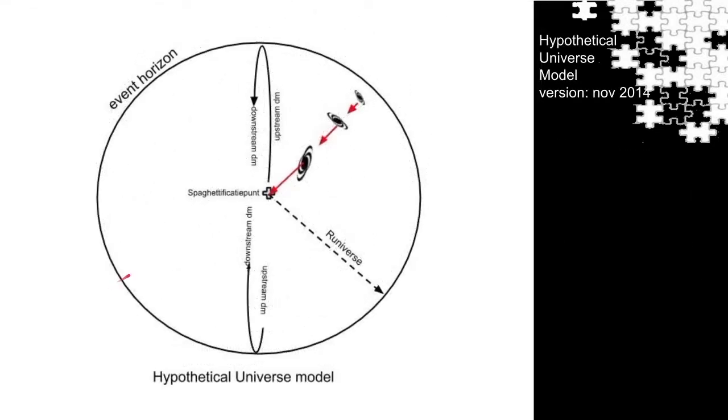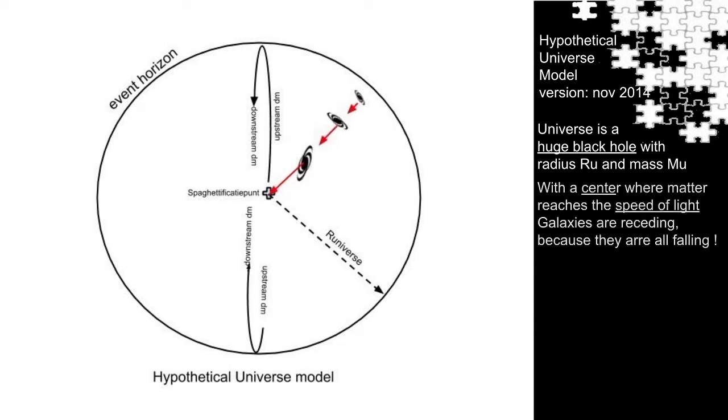After five years of struggling and puzzling, this is my basic hypothetical model of the universe. As mentioned, it is a universe-sized black hole with finite mass M universe and a finite radius R universe. And we do have a center.